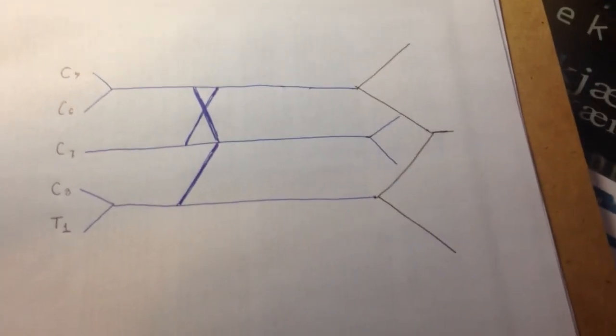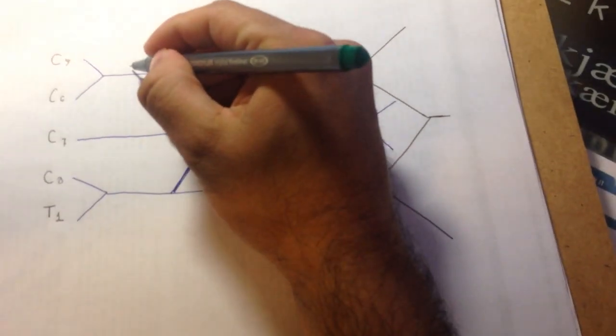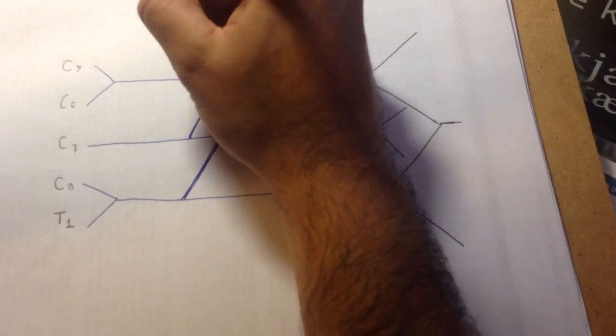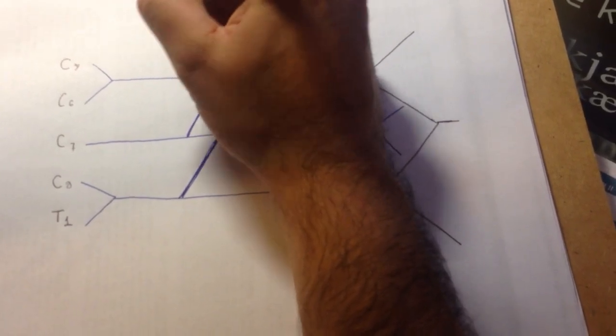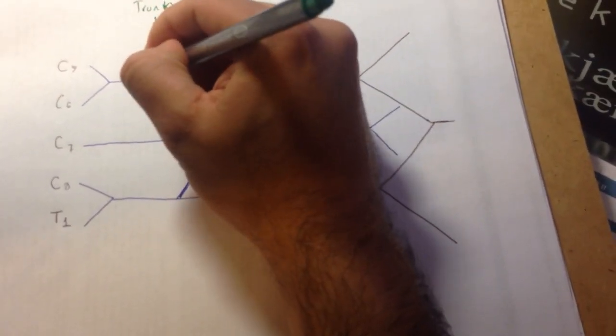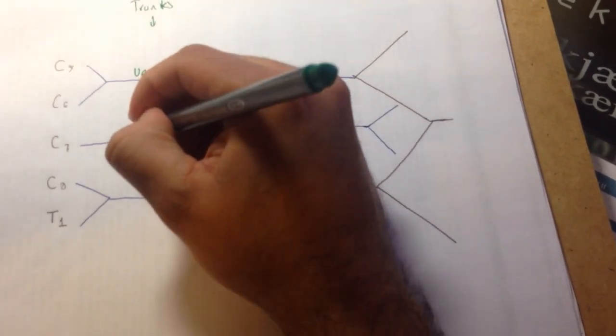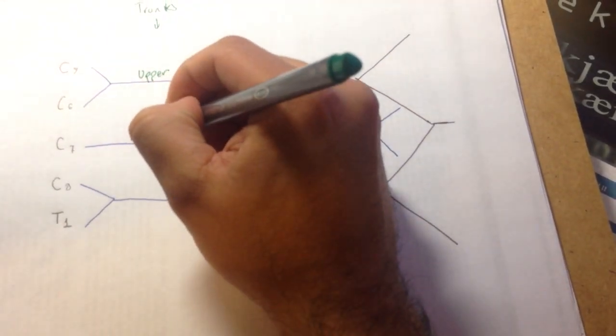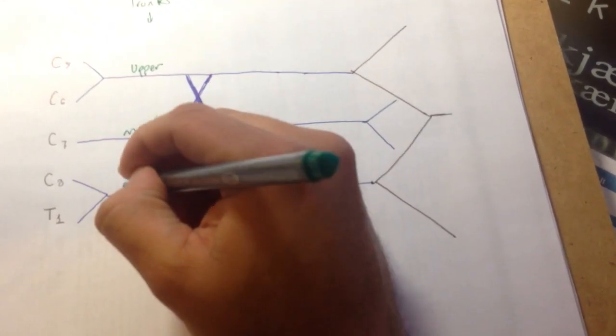We're going to name them from left to right. So, from left to right, they're going to be named like this. This is going to be the upper trunks. So, these are the trunks. This is going to be the upper. This is going to be the middle. This is going to be the lower.